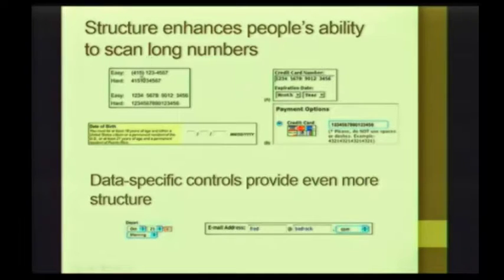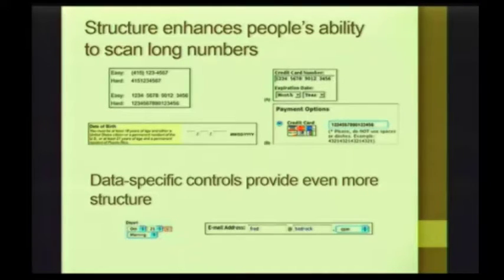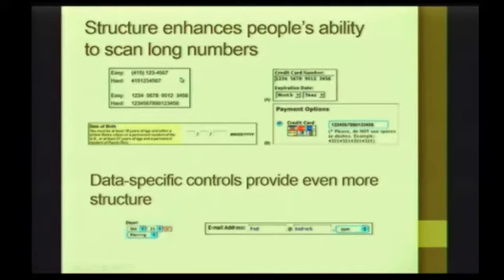What about telephone numbers? Who remembers how we tend to remember telephone numbers? Do we tend to remember one digit at a time? No, we don't. We tend to break it up. How do we usually break it up? Area code, the first three numbers, and then the last four numbers. That's how we tend to store and process this information in our mind. So which of these do you think is easier for us to figure out — what our phone number is, if it's correct?